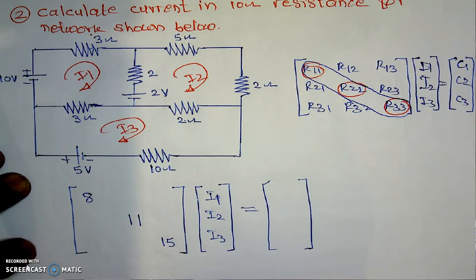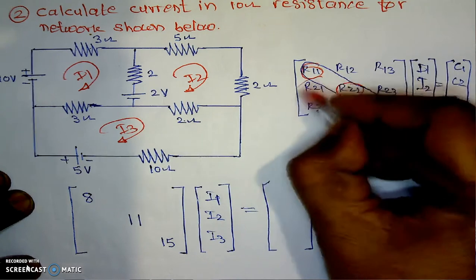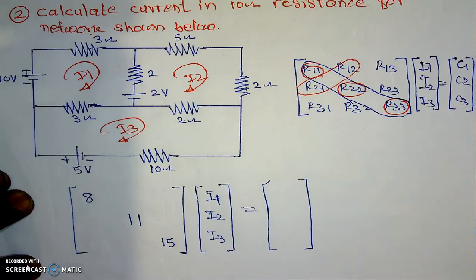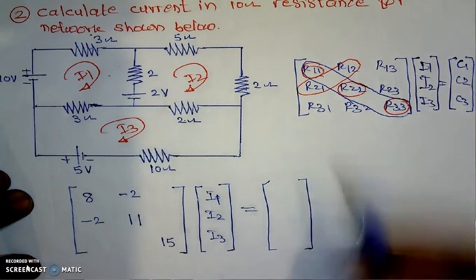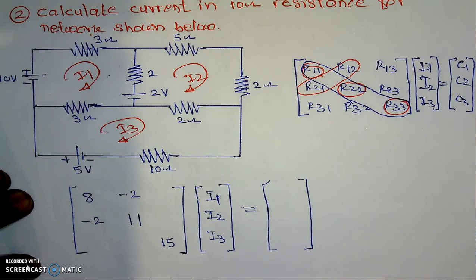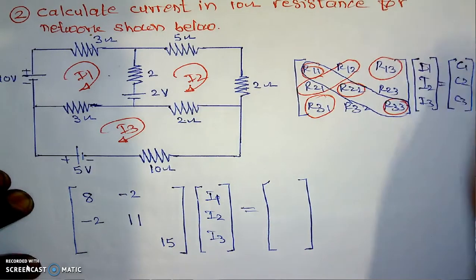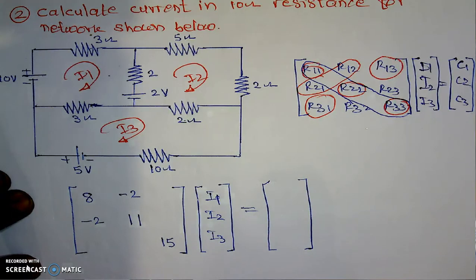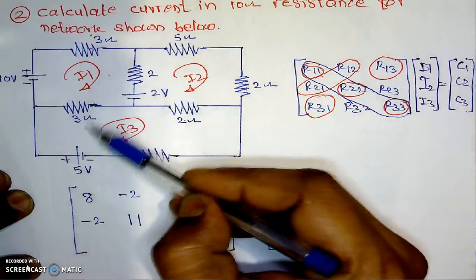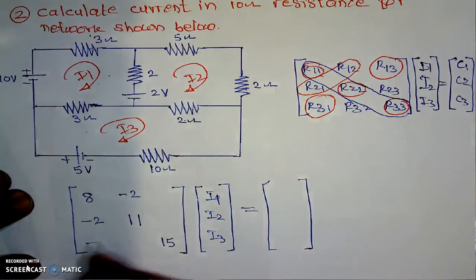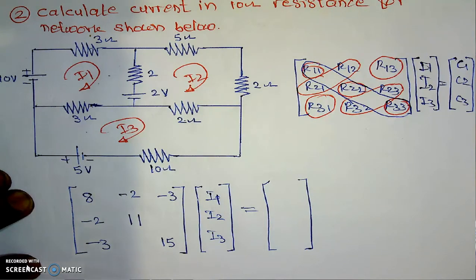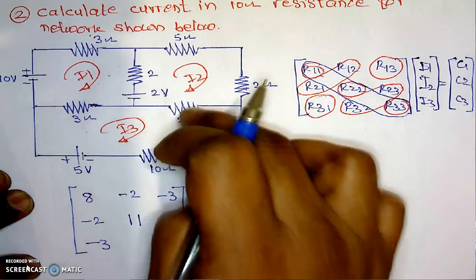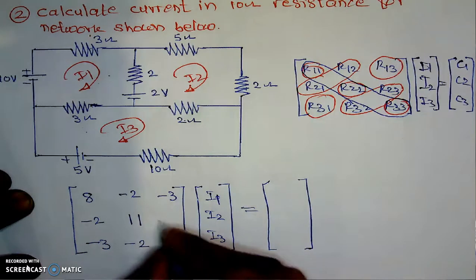All remaining elements are negative. For R12 and R21, the resistance common to the first and second loop is 2, so its value is minus 2. R12 equals R21, so it is minus 2. For R13 and R31, the resistance common to the first and third loop: the common element is 3, so its value is minus 3. For R23 and R32, the resistance common to the second and third loop: the common element is 2, so its value is minus 2.